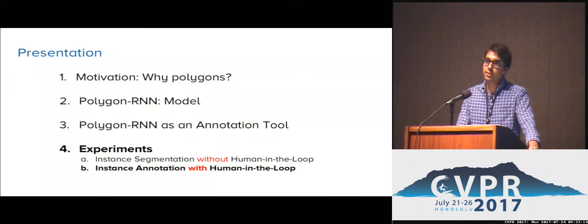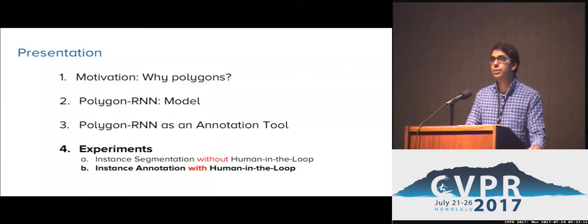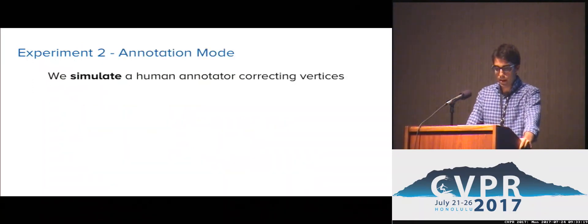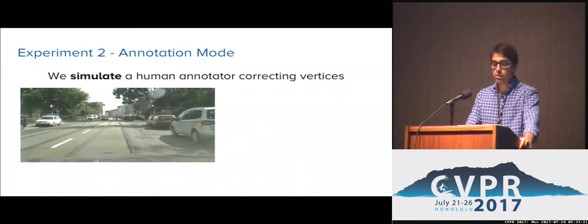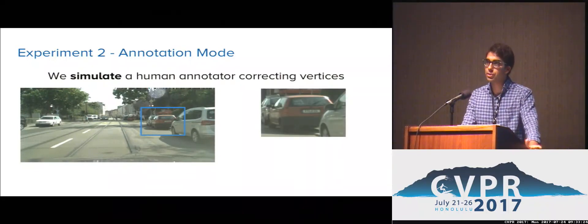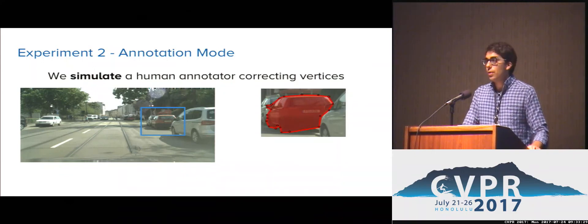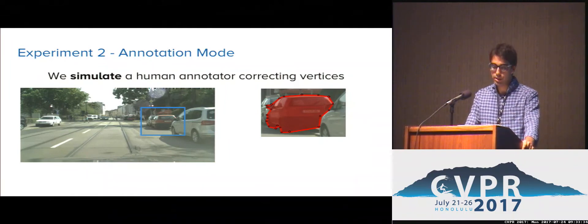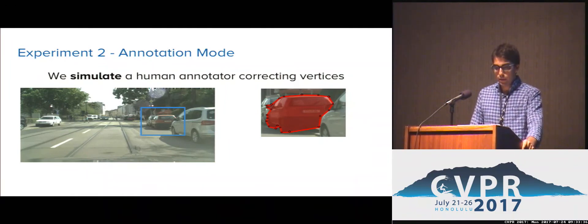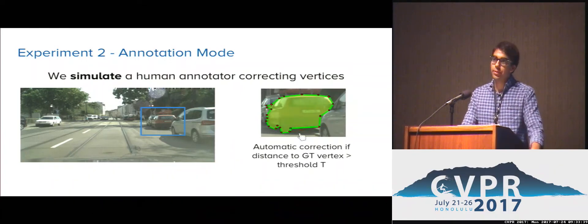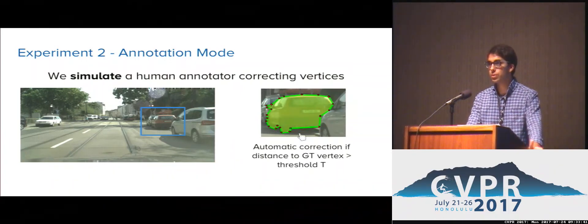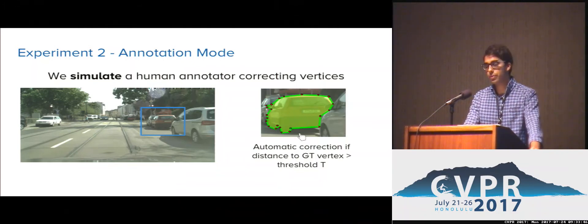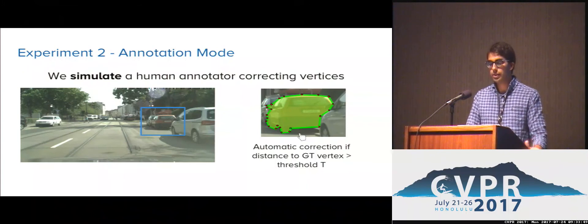Now I'm going to talk about how we can annotate instances by simulating user corrections. Again, we are given bounding boxes for some instances and we want to generate a segmentation for each of them. We predict one vertex at a time and align each of these predictions with a corresponding ground truth vertex in the annotation. If one of these vertices deviates farther than a distance threshold T from its corresponding ground truth vertex, we automatically correct it. This correction is then fed into the model, which continues the prediction taking it into account.